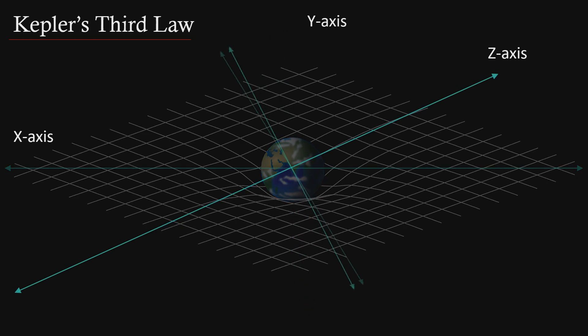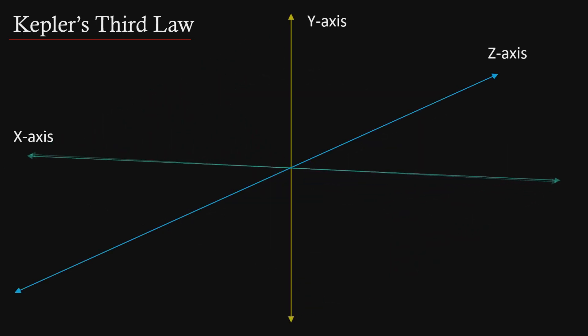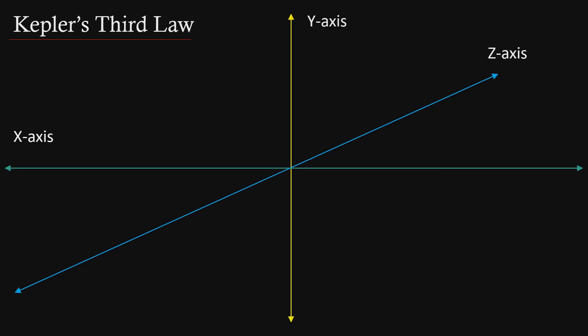Let's start with our x, y, z axes that allow us to assign a location to absolutely everywhere in our three-dimensional world. We'll lay this out in our typical fashion, where the x axis is the horizontal green line — the width — the y axis is the vertical yellow line — the height — and the z axis is the diagonal blue line — the depth.